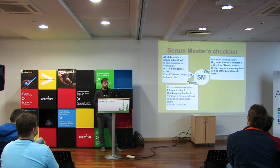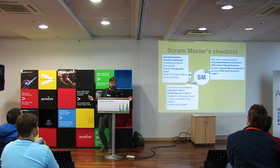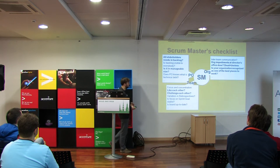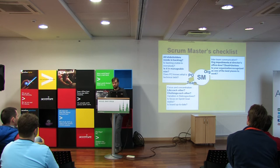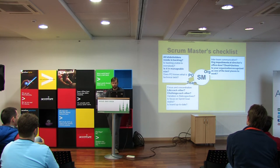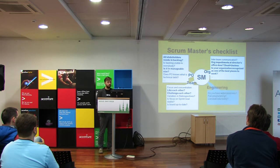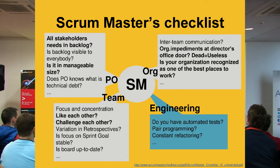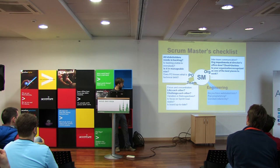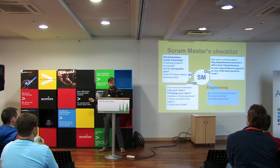The most interesting for me was the organizational section. We don't work alone — there's always a broader organization around us. If there are impediments blocking the team, are you as Scrum Master actually going to the manager's room? As Ken Schwaber says, a Scrum Master who doesn't do that is a useless Scrum Master. Is your organization recognized as one of the best places to work? On engineering — Scrum Framework doesn't specifically talk about engineering practices, but this checklist does: do you have automation? Do you pair? Do you refactor constantly?